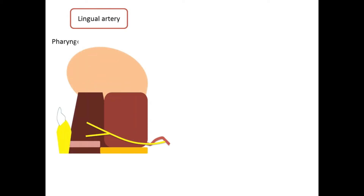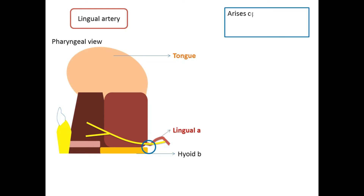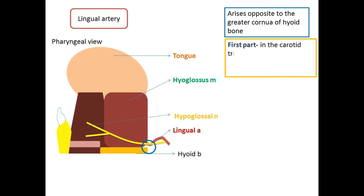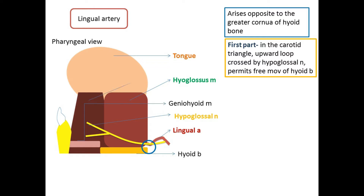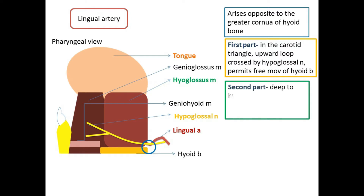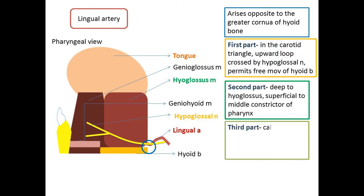The lingual artery arises from the external carotid artery opposite the tip of the greater cornu of the hyoid bone. Its course is divided into three parts by the hyoglossus muscle. The first part lies in the carotid triangle and forms a characteristic upward loop crossed by the hypoglossal nerve; this lingual loop permits free movements of the hyoid bone. The second part lies deep to the hyoglossus along the upper border of the hyoid bone, superficial to the middle constrictor of the pharynx.